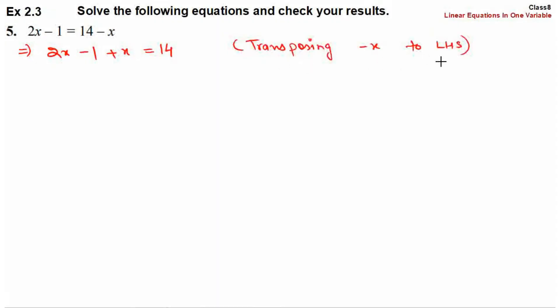Transposing minus x to the left hand side. So 2x plus x, this is 3x, minus 1 equals 14.